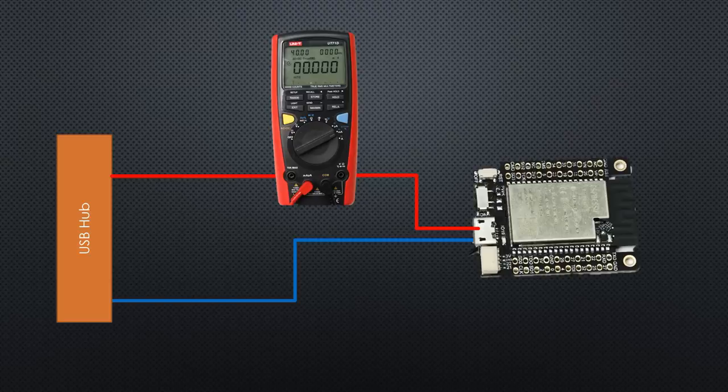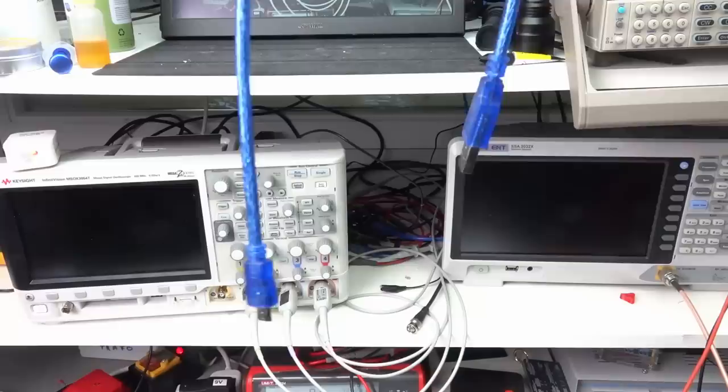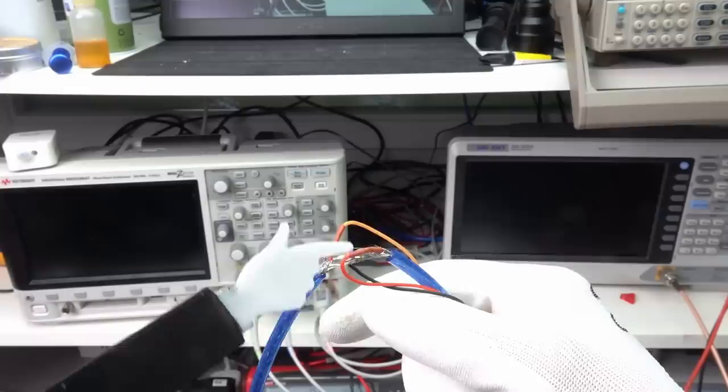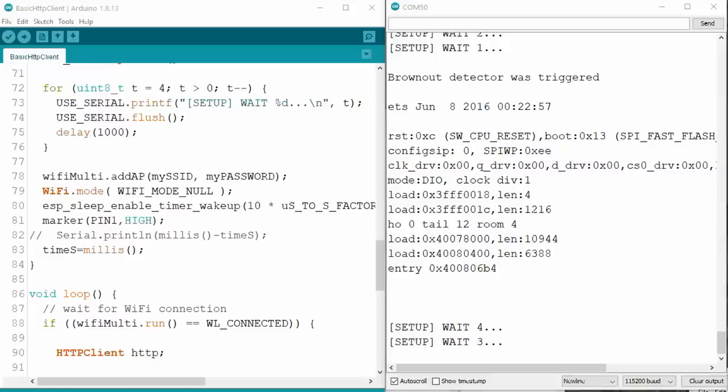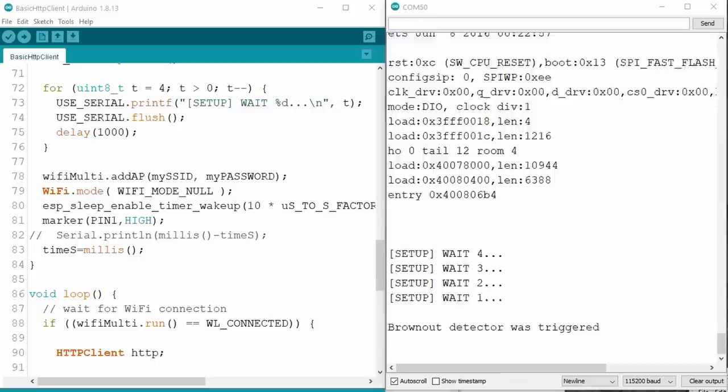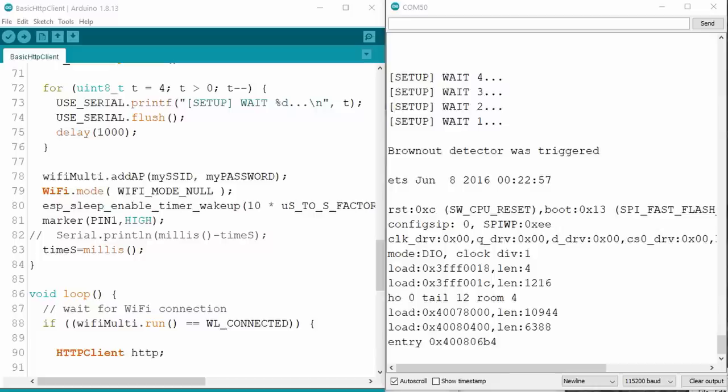Measuring the current of this Lilygo T7 board is simple. We use our bench multimeter connected between the USB hub and the device and measure current. Right? Let's try it out. I cut the VCC wire of this USB cable in the middle and insert my UT71D multimeter. Because I expect to measure around 100 mA, I select the mA range. For the experiment, I use the basic HTTP client example sketch. It starts without problems.